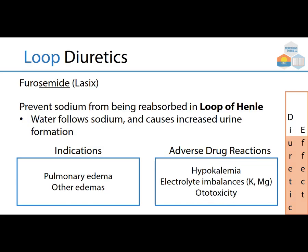Furosemide, or Lasix, works in the loop of Henle. It prevents sodium from being resorbed there; water follows the sodium and causes increased urine formation. Used for pulmonary edema, other edemas, and sometimes congestive heart failure. Adverse drug reactions include hypokalemia (potassium loss), electrolyte imbalances including magnesium, and ototoxicity, where there may be hearing issues.